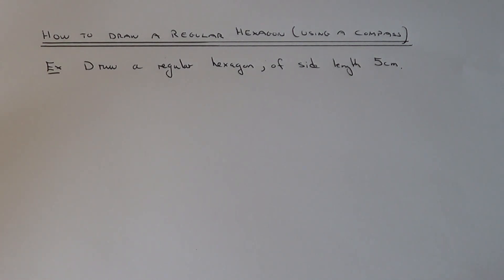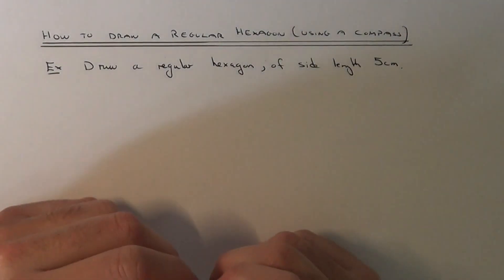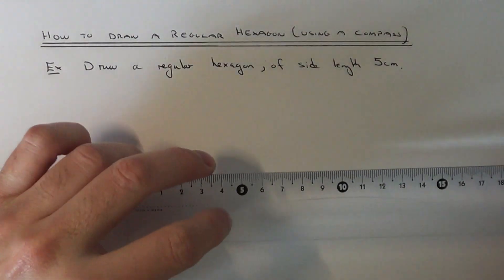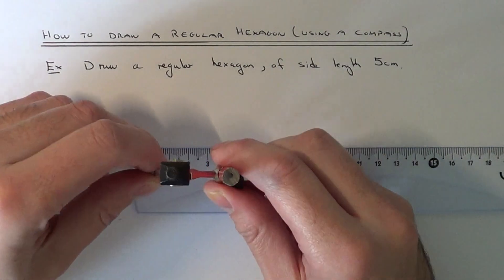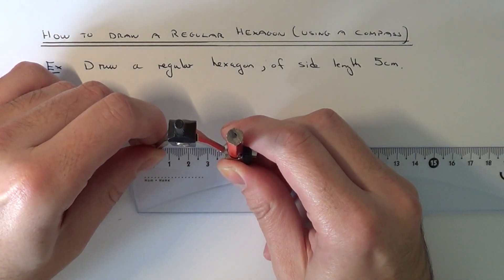This is a really easy method to do. I'm going to draw a regular hexagon of side length 5cm. So get your compass and the first thing you need to do is open your compass out to a radius of 5cm.